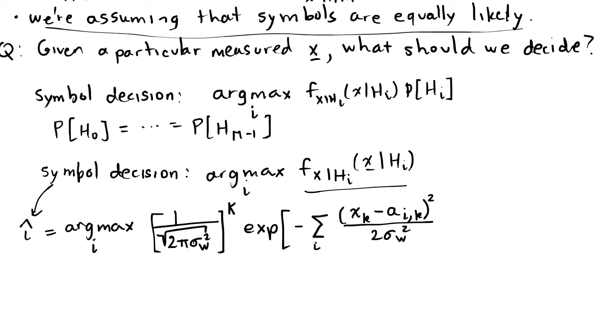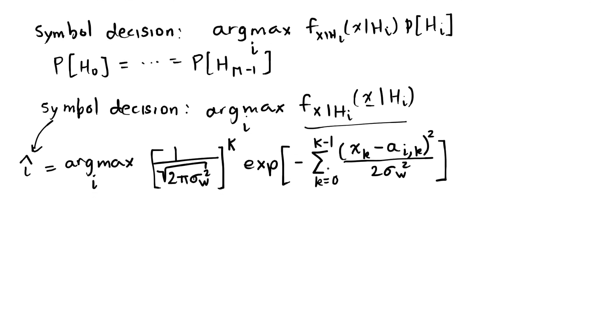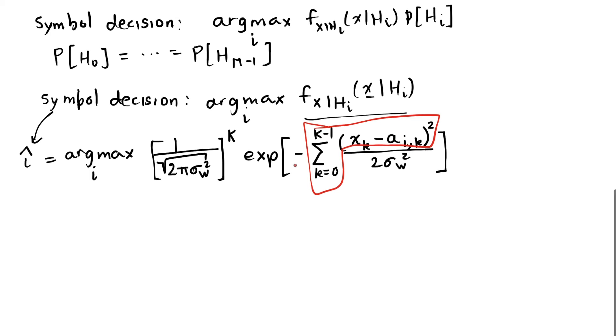We can convert that joint probability density function into a product of probability density functions, and with this exponential we can bring the product into the sum. And this sum, this sum of the distances, the squared distances between x,k, and the elements of the Si vector, Ai sub k, is a distance. It is the distance x vector minus Si vector magnitude squared.